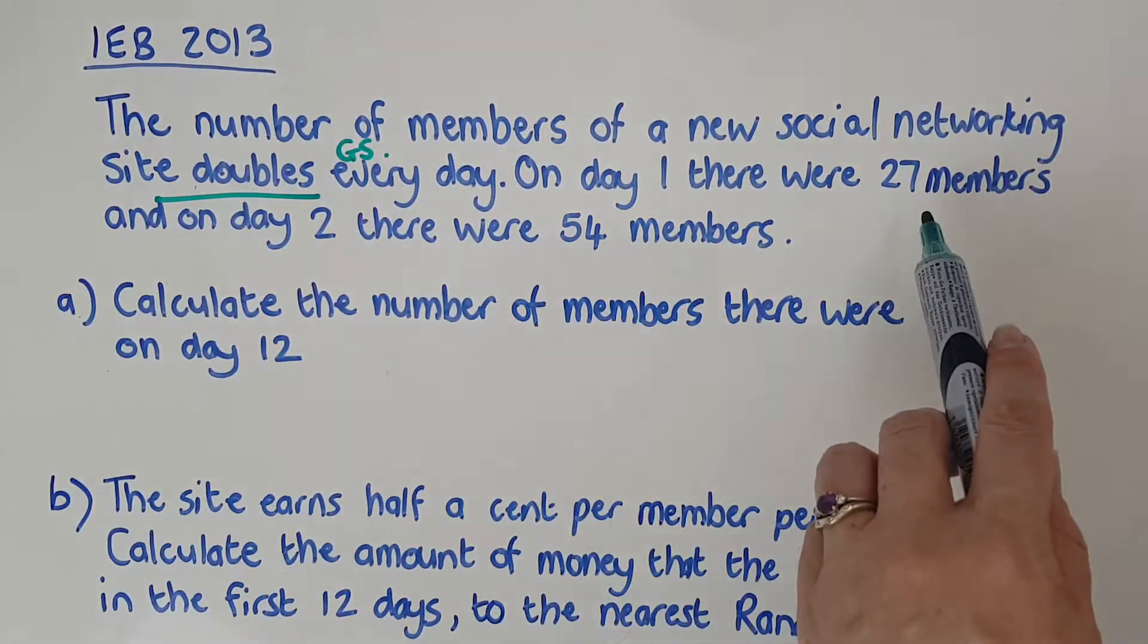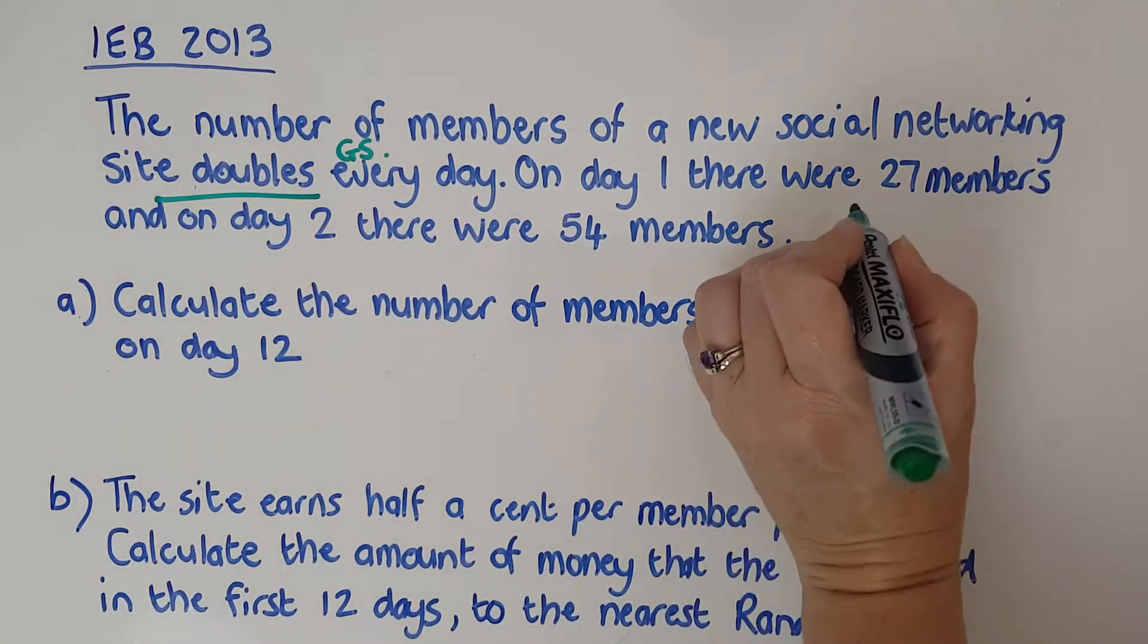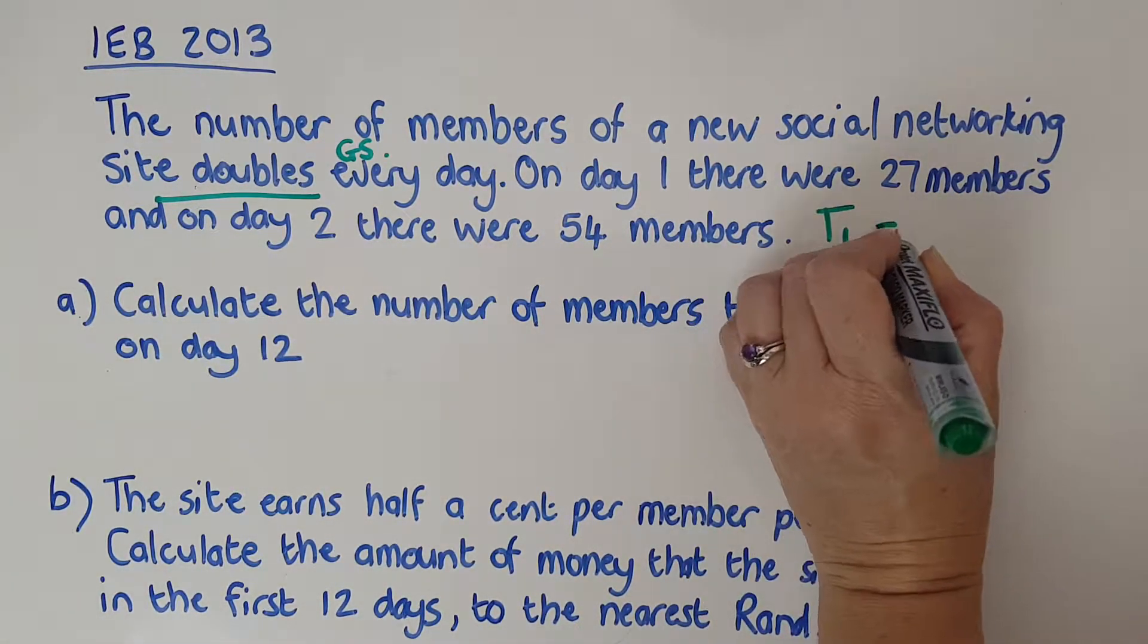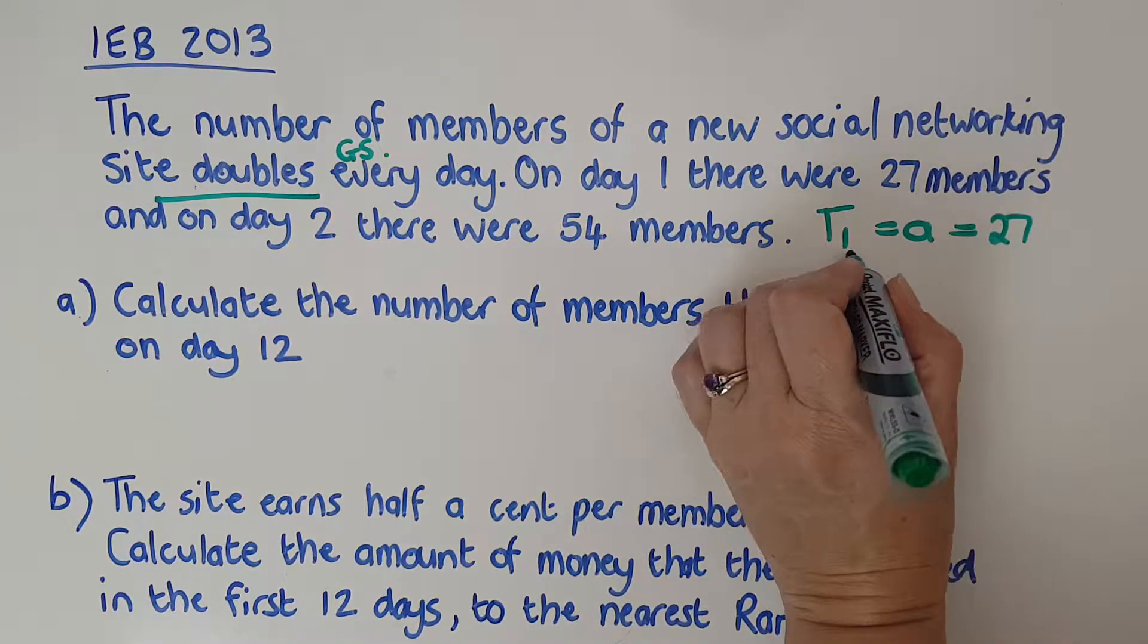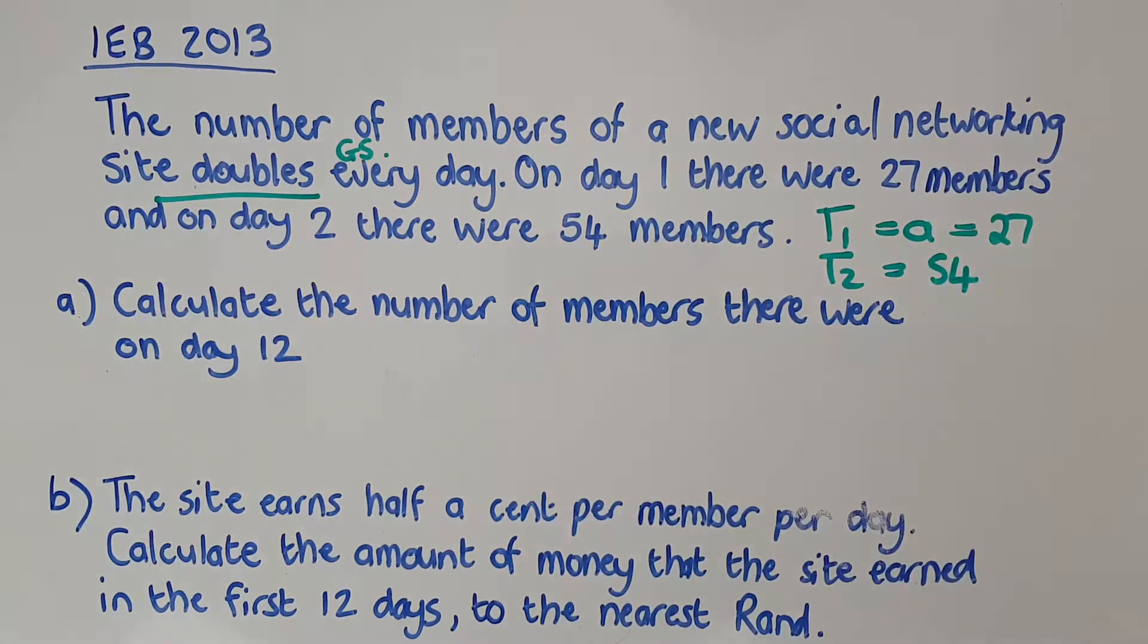On day one there's 27, day two there's 54. That's really easily translated as T1 which is also A is 27 and then T2 is going to be 54. They didn't even need to give that to me because they could have just given me 27. Calculate the number of members there were on day 12. The second question says the site earns half a cent per member per day. Calculate the amount of money the site earned in the first 12 days to the nearest Rand.